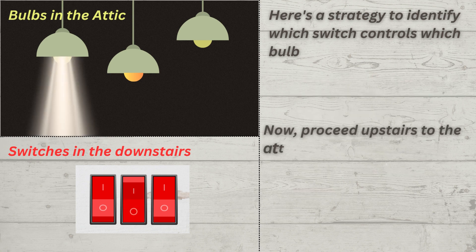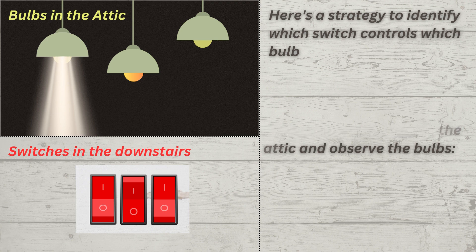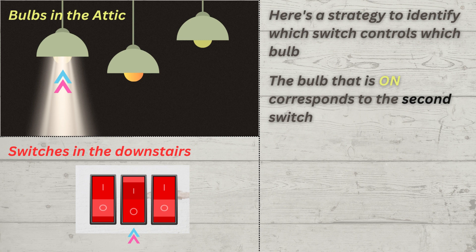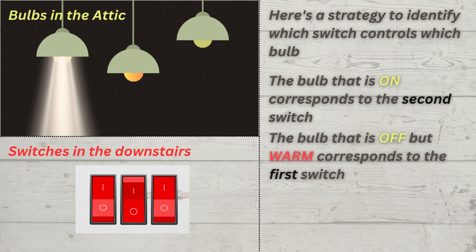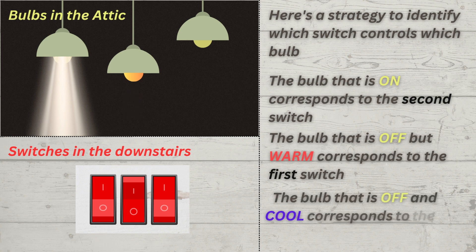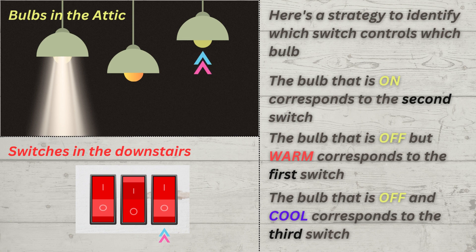Now proceed upstairs to the attic and observe the bulbs. The bulb that is on corresponds to the second switch. The bulb that is off but warm corresponds to the first switch. The bulb that is off and cool corresponds to the third switch.